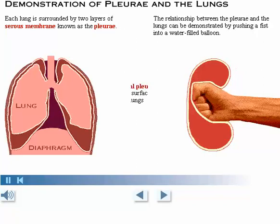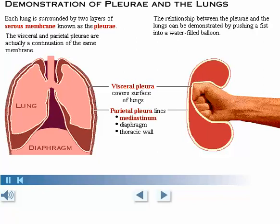The inner part of the balloon, which wraps around the fist, represents the visceral pleura. The visceral pleura is the part of the pleura which covers the surface of the lungs. The outer part of the balloon represents the parietal pleura, which lines the mediastinum, the diaphragm, and the thoracic wall. Notice that the visceral and parietal pleura are actually a continuation of the same membrane. The water-filled space between the two layers represents the pleural cavity, which contains pleural fluid.